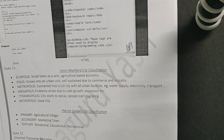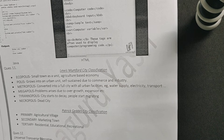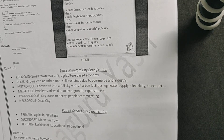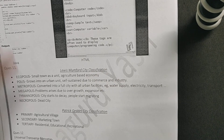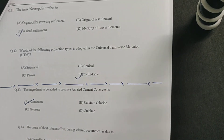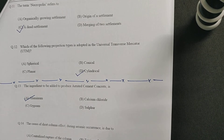The fifth stage is tyrannopolis, where due to many problems, people start moving out of the city and try to settle elsewhere — the city starts to decay and people begin migrating. The last stage is necropolis, which is the dead city — all the people have left. So the answer for necropolis would be C: a dead settlement. The question paper, answer sheet, and notes are in the description box below.